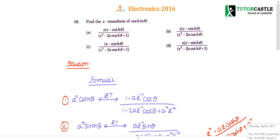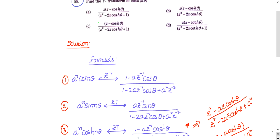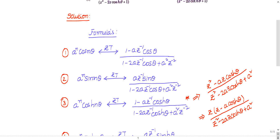Question number 58: Find the Z-transform of cos hyperbolic of nθ. These questions are again simple formula-based questions. If you have studied signals and systems Z-transform formulas, this question is nothing — you can answer it in 2 to 5 seconds. This question is again straightforward.